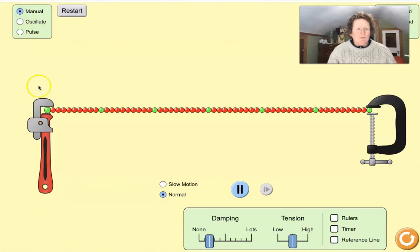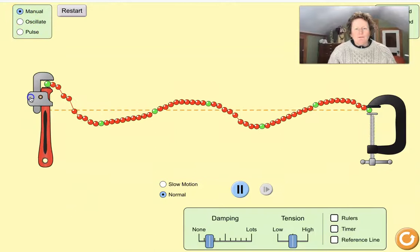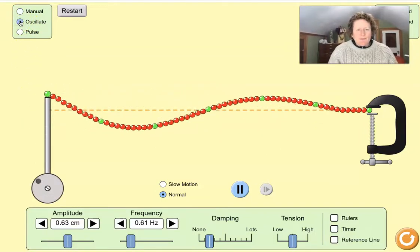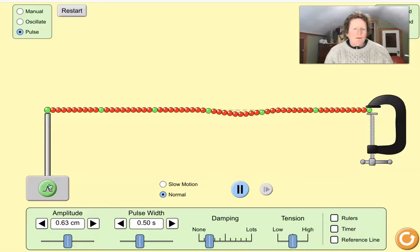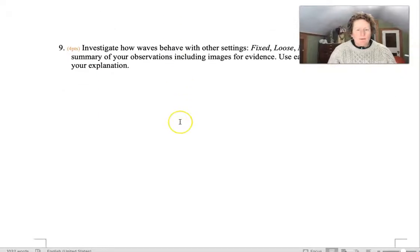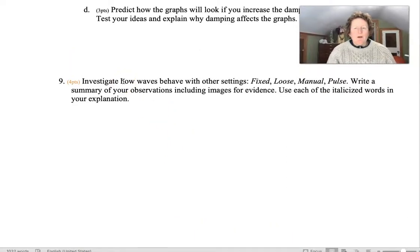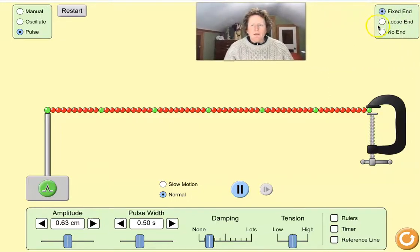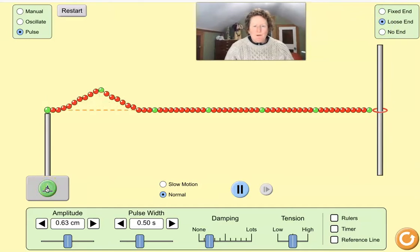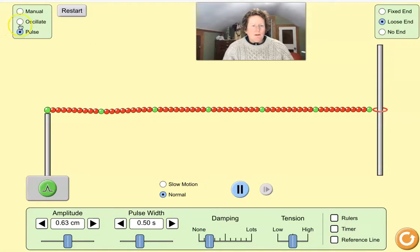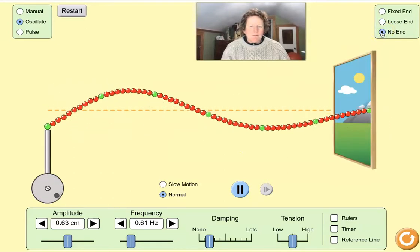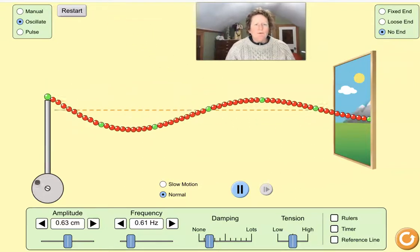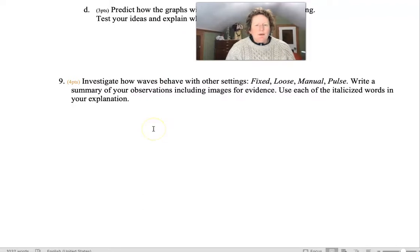And you can experiment with making manual waves and how that's different than using oscillate to make waves or using a pulse to make waves. So, you can go into the simulation, you can experiment with all of those. Oh, here is a loose end. If you want to make waves with a loose end, which I highly recommend, you can go to oscillations with a loose end. You can make waves with no end. Those are all good things to experiment with as you describe things that are happening for number nine.